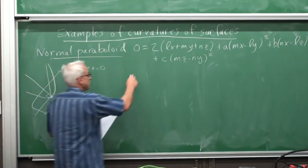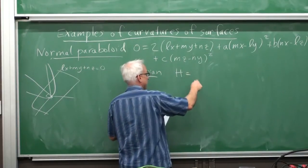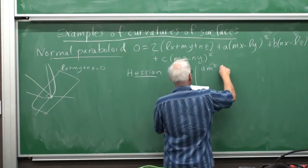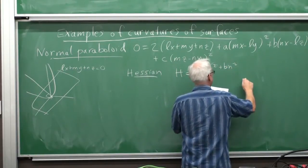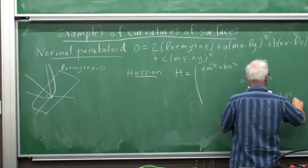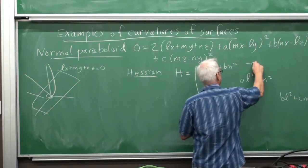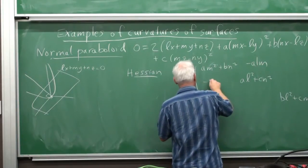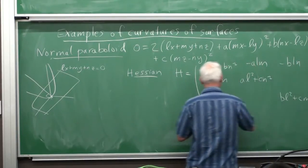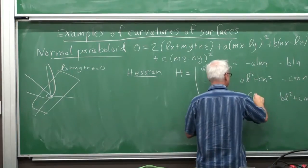It's useful to introduce a few matrices. The Hessian, the three-by-three matrix, will have this form: the diagonal entries are am² + bn², al² + cn², and bl² + cm². It's symmetric with off-diagonal entries −alm, −bln, and −cmn.